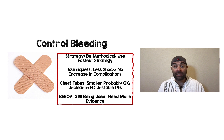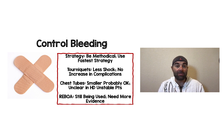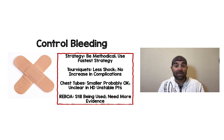To summarize controlling bleeding: be methodical and use the fastest strategy available. Tourniquets lead to less shock and no increase in complications — definitely something we should be implementing. For chest tubes, smaller is probably okay and we're trending in that direction, but the study reviewed had cherry-picked, hemodynamically stable patients — have that conversation with your local trauma surgeon. And REBOA: many facilities are still using it, but we need more evidence to find the right niche of patients. It should not be applied broadly to all trauma patients.